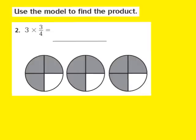Based on the whole number 3, we've drawn 3 circles. Now I need to identify my denominator in the fraction, and that denominator is a 4. So we've now divided those 3 circles into 4 equal parts each.